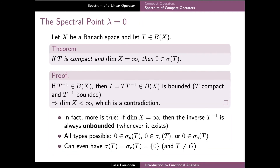In the previous result we only considered spectral points of T outside the origin. It turns out that the point 0 is always in the spectrum of a compact operator when X is an infinite dimensional space. Indeed, if T would have a bounded inverse, then the identity operator on X could be written as a composition of the compact operator T and the bounded operator T inverse, and therefore the identity operator would be compact as well. But as we saw before, this can only happen if X is finite dimensional.